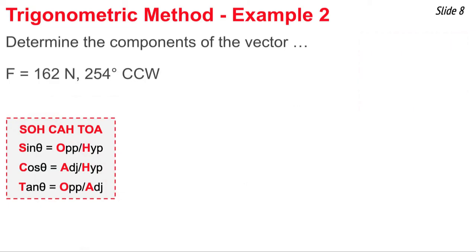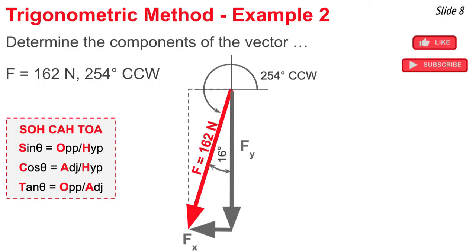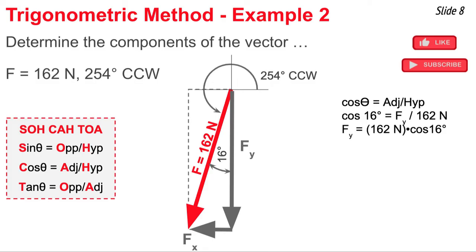Now I will use the trigonometric method to do a second example, determining the components of a force vector that has a magnitude of 162 newtons in a direction of 254 degrees counterclockwise from east. First I'll sketch the vector and label its magnitude. Then I'll sketch a parallelogram around the vector, and I'm going to choose the right triangle that is below and to the right of this force vector to analyze. It has an angle of 16 degrees to the west of south. I'm going to call the vertical side the fy side and the horizontal side the fx side. I will use the cosine function to relate the length of the side adjacent to 16 degrees to the hypotenuse's length. The adjacent side is fy and the hypotenuse length is 162 newtons. I do my algebra and solve for fy — I get 156 newtons.